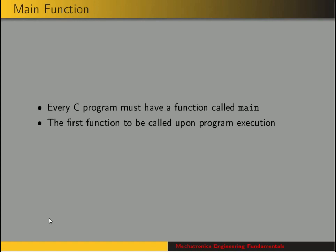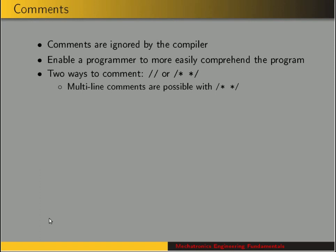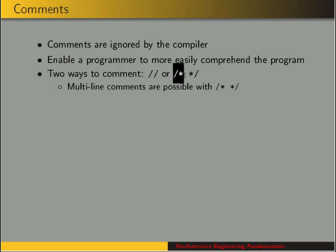Every C program must have a function called main. This is the first function to be called upon program execution. Main can call other functions, and inside your program you can have other functions, but you must have one called main and it's the one called first. Comments are useful in writing programs — a comment is text that's ignored by the compiler. There are two ways to comment in C: the double backslash, or the slash-asterisk to open and asterisk-slash to close a multiline comment.